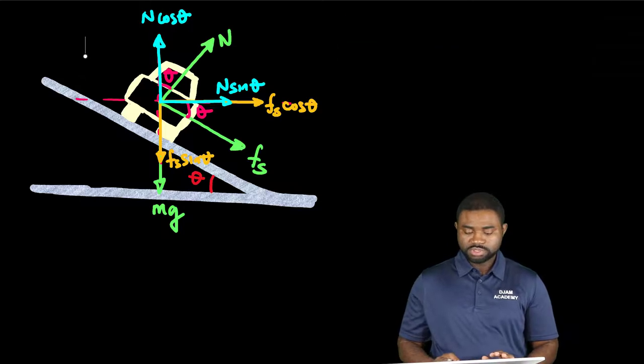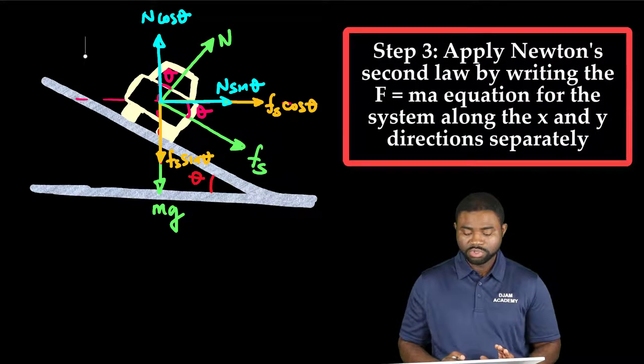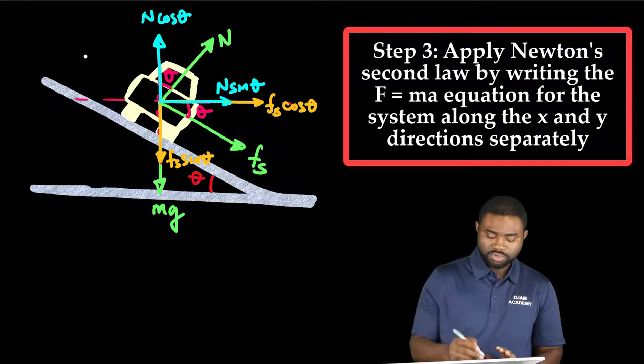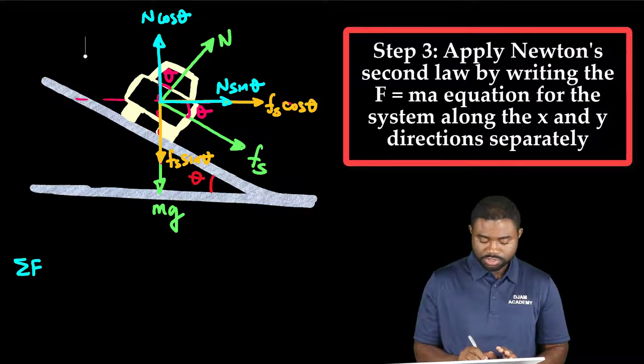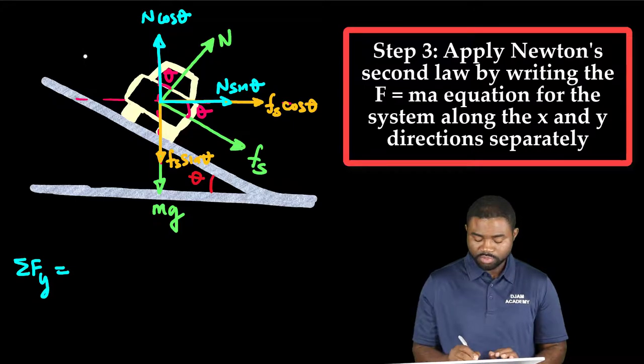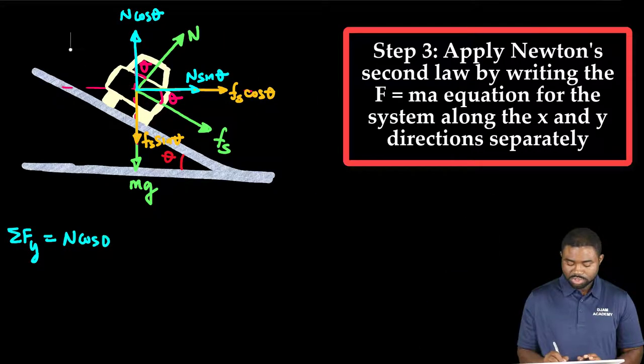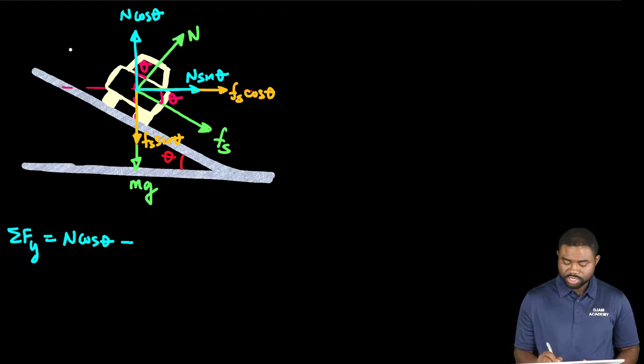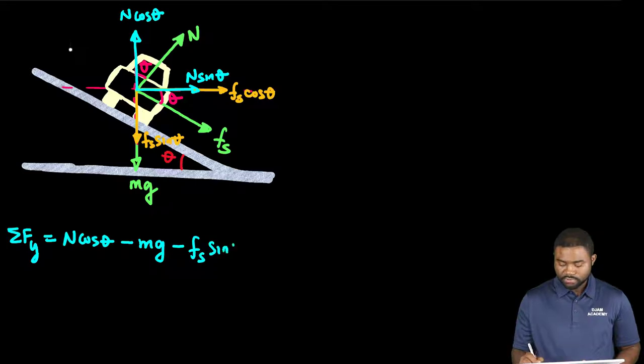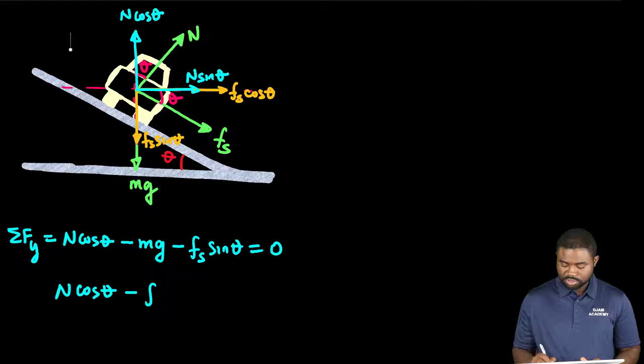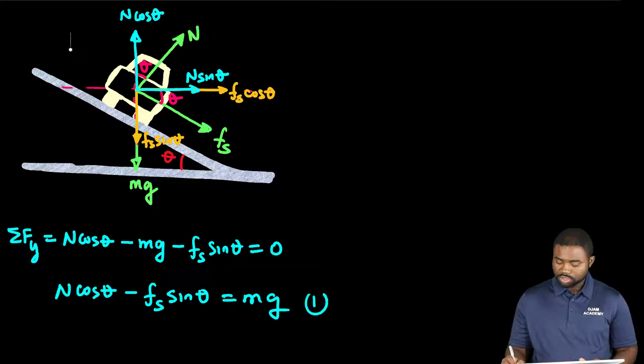The next critical step is to apply Newton's second law in both directions. The sum of forces along the Y direction will be the forces upwards, which is N cosine theta, minus the forces downwards, which is mg minus Fs sine theta. So N cosine theta minus Fs sine theta will be equal to mg. I'm going to call this equation 1.